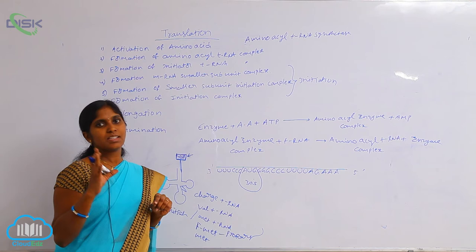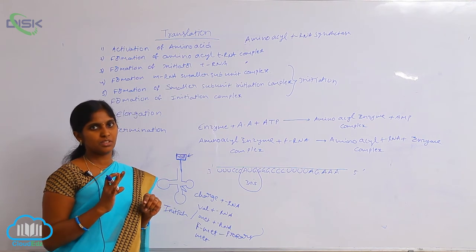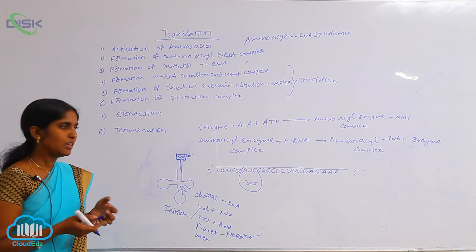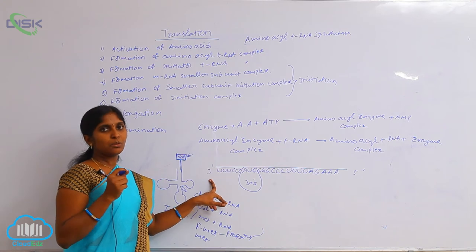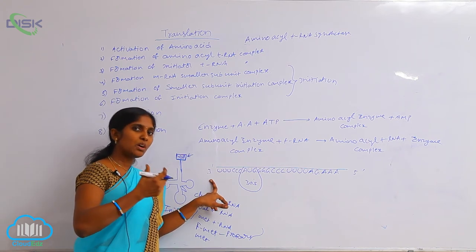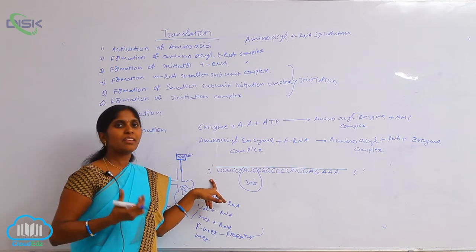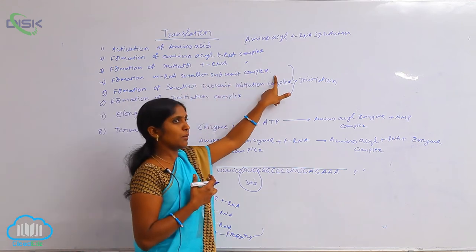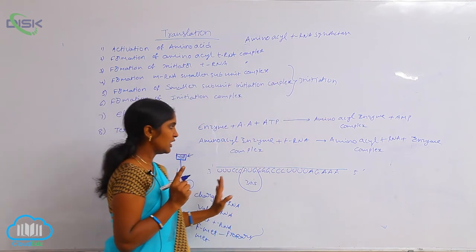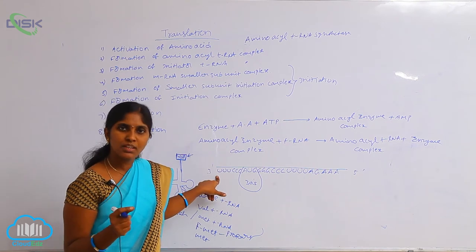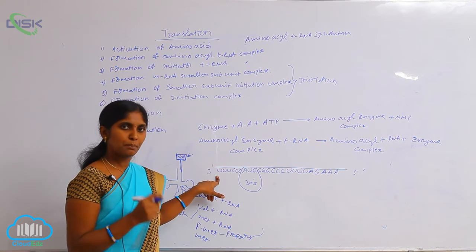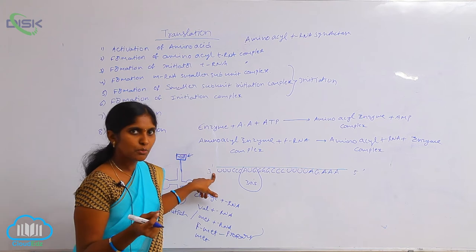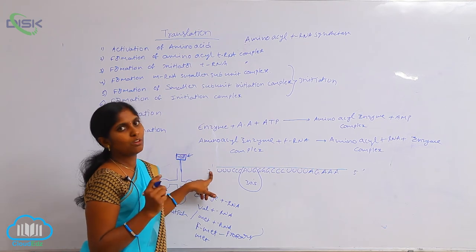Translation is generally described in three steps: initiation, elongation, and termination. In initiation, mRNA is most important — it gives the genetic information, and according to that, amino acids are carried towards the ribosome where they are polymerized. The mRNA is already produced in the nucleus, processed through capping, addition, and splicing procedures, then maturated and carried by informosomes towards the ribosome where it is involved in protein synthesis.